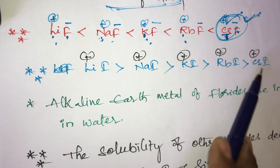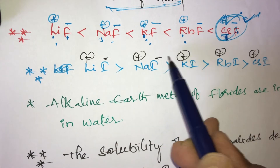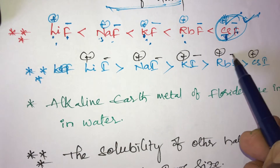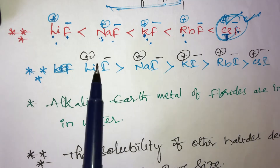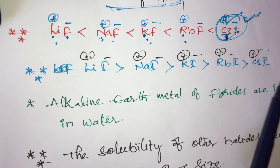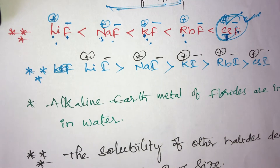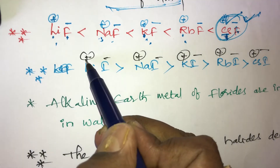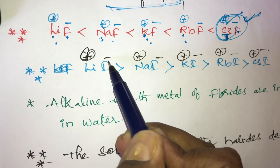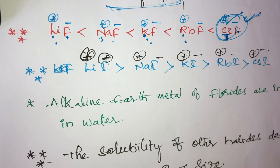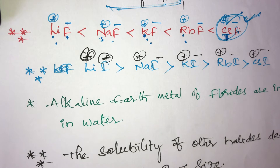Here all anions are the same — iodine (I⁻). All compounds have equal size of anion. But out of these, which one is highly soluble in water? Lithium has small cation size and iodine is large anion size. Large size of anion is also highly soluble in water.